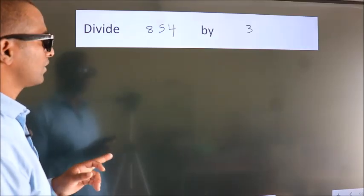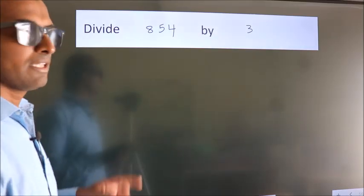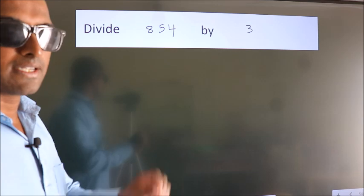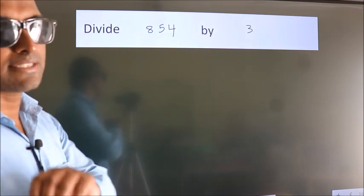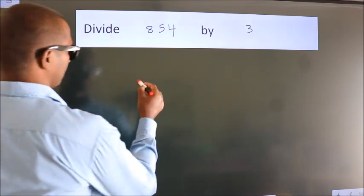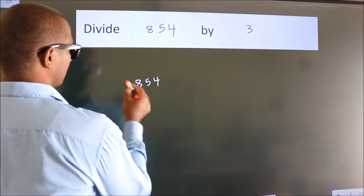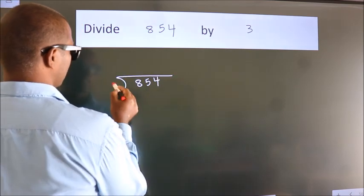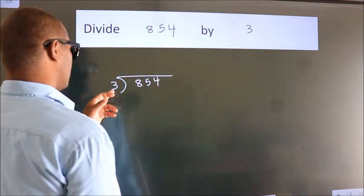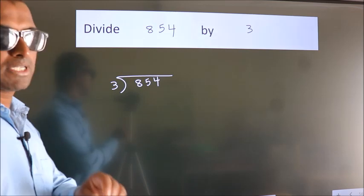Divide 854 by 3. To do this division, we should frame it in this way. 854 here, 3 here. This is your step 1.